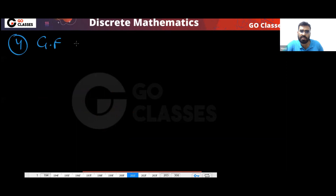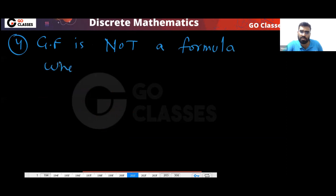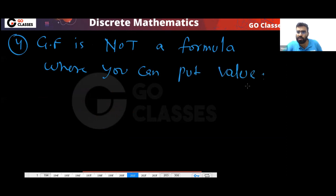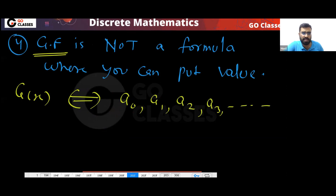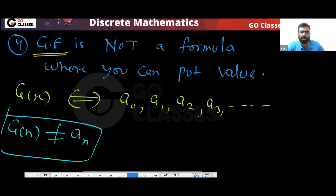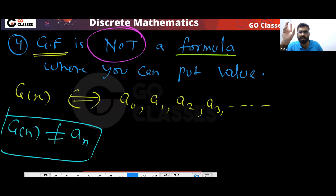The fourth important point: generating function is not a formula where you can substitute values. If you have a generating function G(x) for a sequence, G(n) is not equal to a_n. You cannot put values. Generating function is a tool to solve counting problems, not a formula.